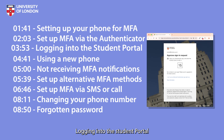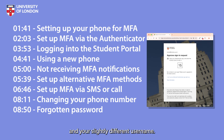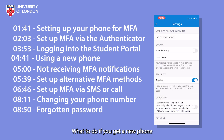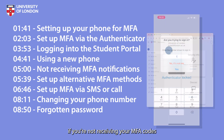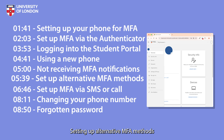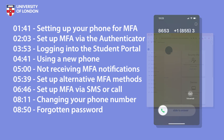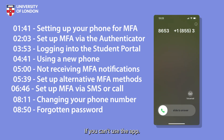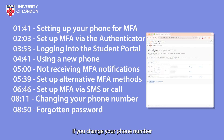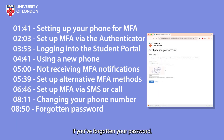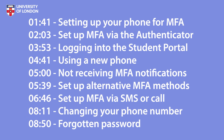We'll cover: logging into the student portal and Inquiry Hub with the app and your slightly different username; what to do if you get a new phone; what to do if you're not receiving your MFA codes; setting up alternative MFA methods in case you lose or break your phone; getting set up and logging in if you can't use the app; what to do if you change your phone number; and what to do if you've forgotten your password. You can jump to the relevant chapters of the video below or use the time codes.